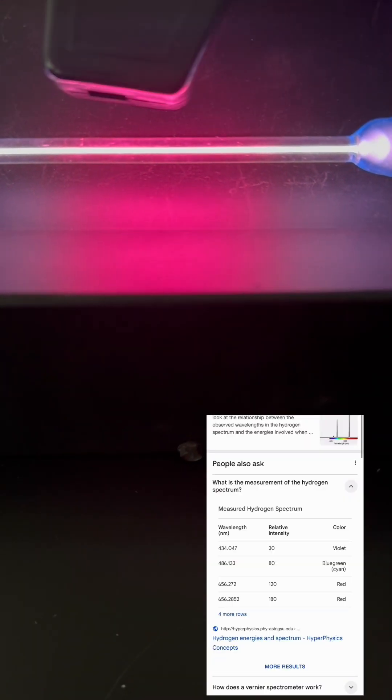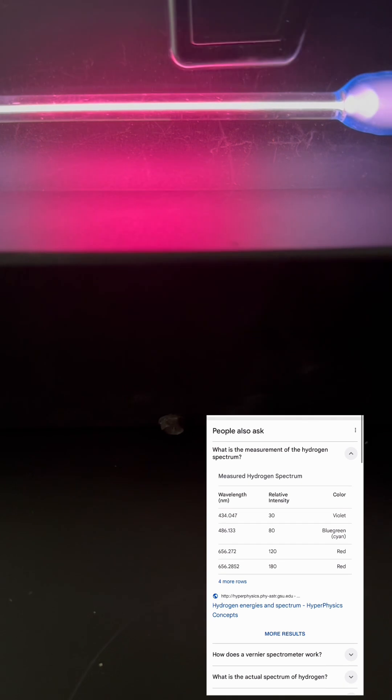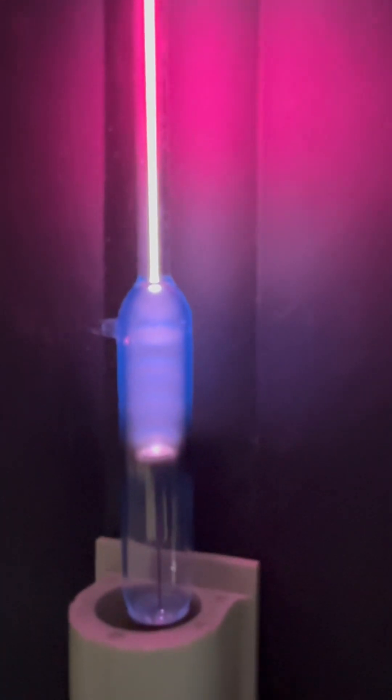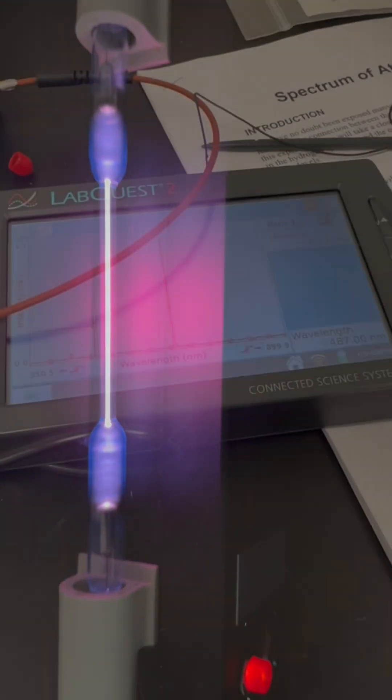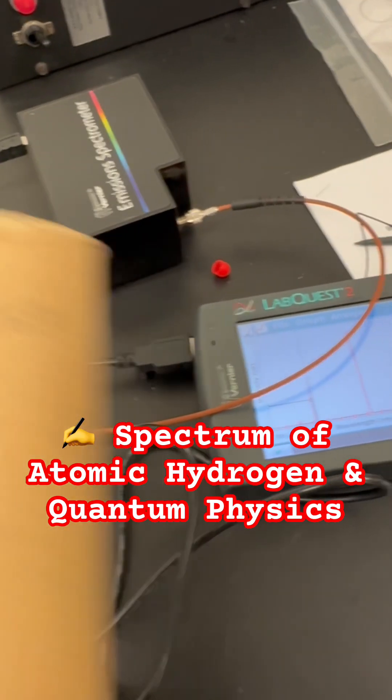We can analyze the emitted light using the emission spectrometer. The spectrum consists of a few distinct lines. Each line corresponds to a specific transition of electrons between energy levels in the hydrogen atom. These spectral lines provide valuable information about the energy levels and structure of the hydrogen atom, helping us understand the fundamental principles of quantum mechanics.